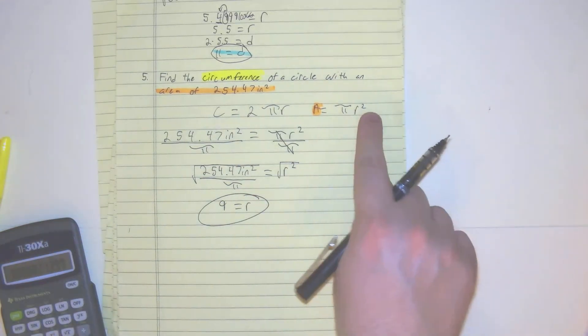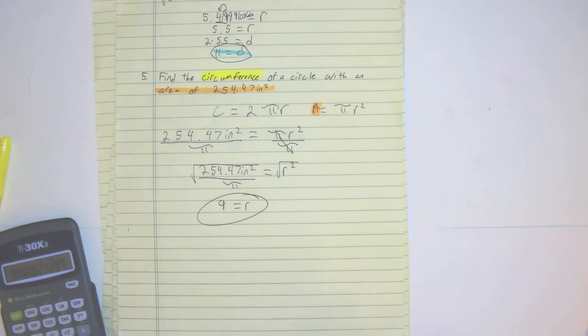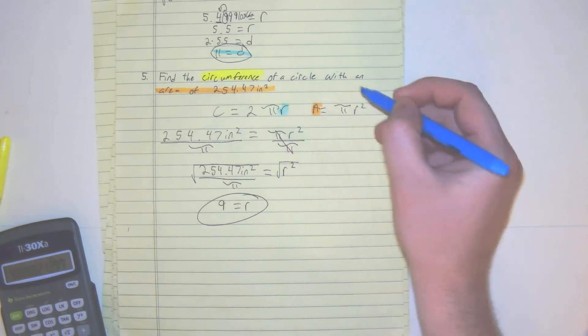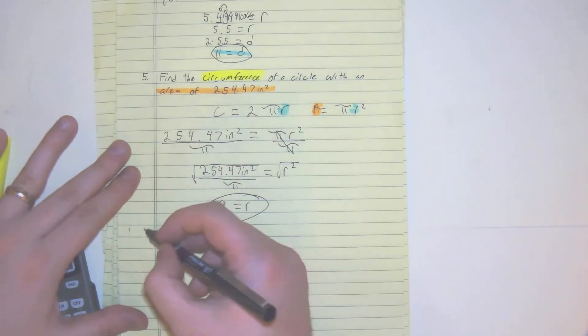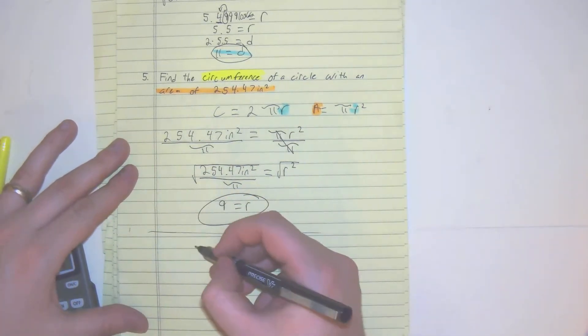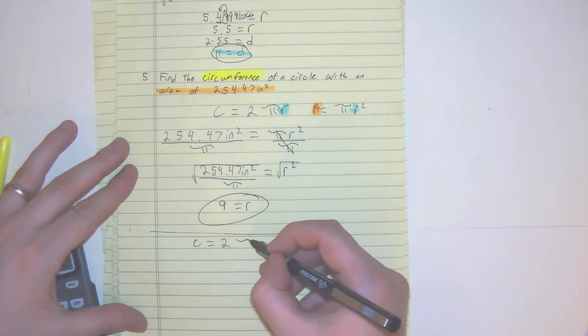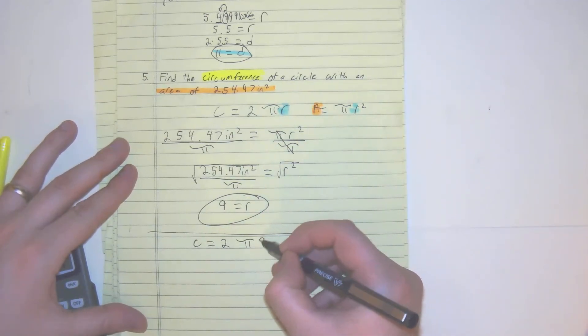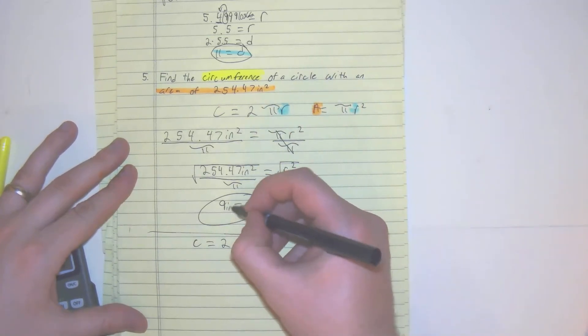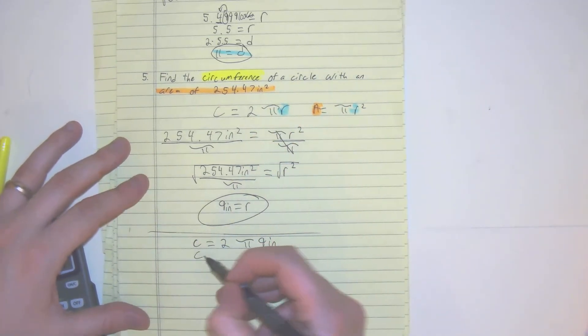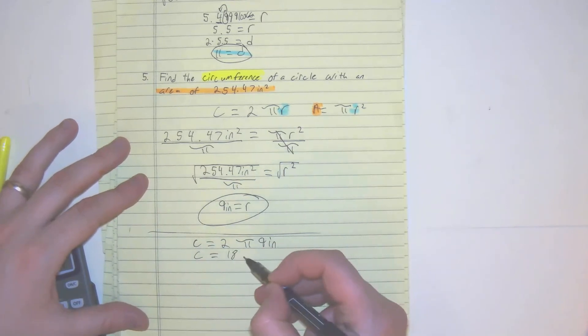So they both share a radius. So what we're going to do now is once we've found that radius, because that's what they both shared, we're going to put that in the circumference. So we have right here, circumference is equal to 2 pi 9. And that was originally inches. So here we get c is equal to 18 pi inches.